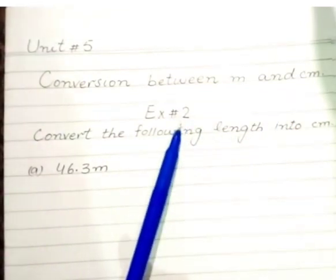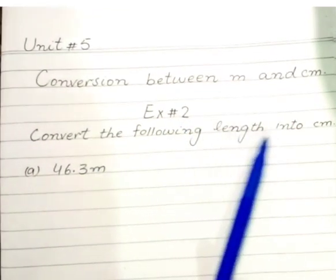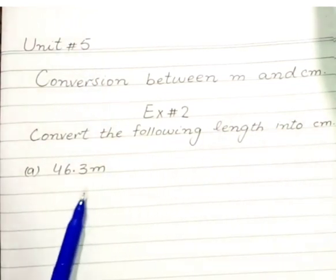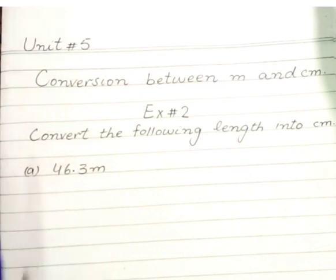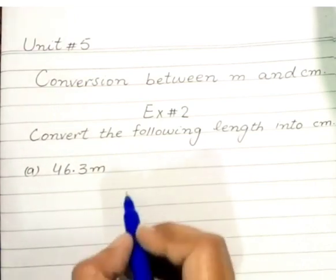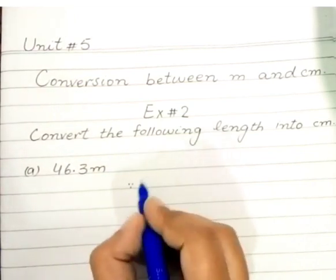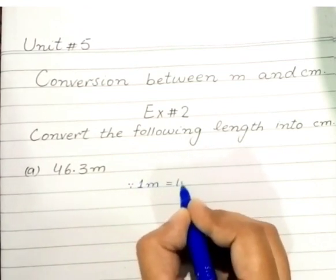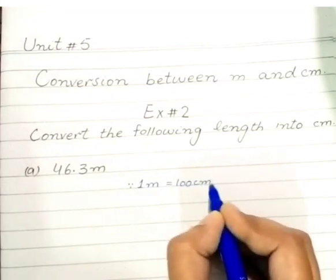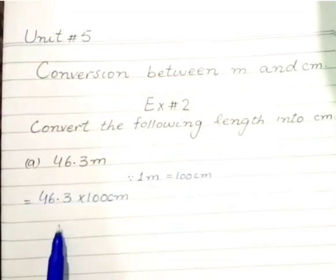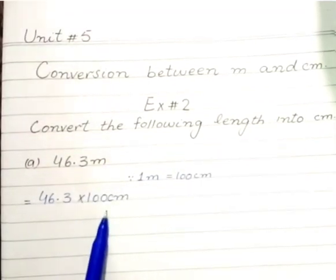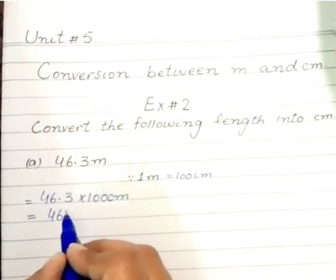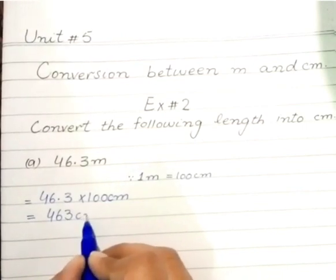Exercise number 2. Convert the following length into centimeter. We know that 1 meter is equal to 100 cm. Let's multiply the given length with 100 cm. So, the answer is 463 cm.